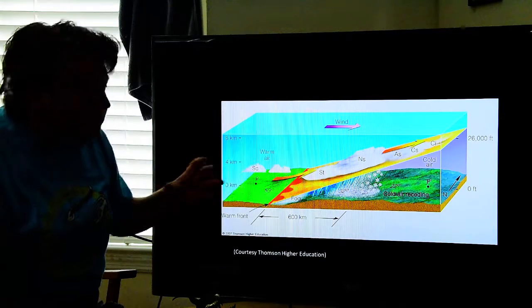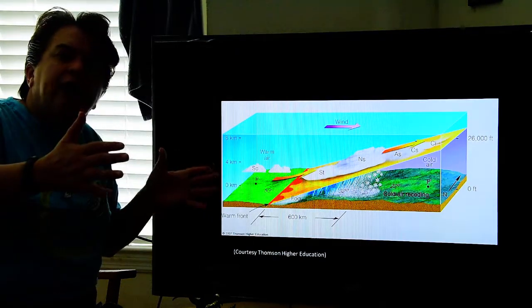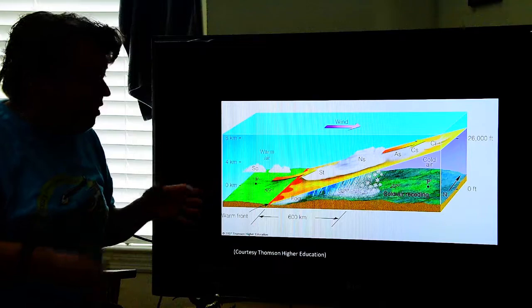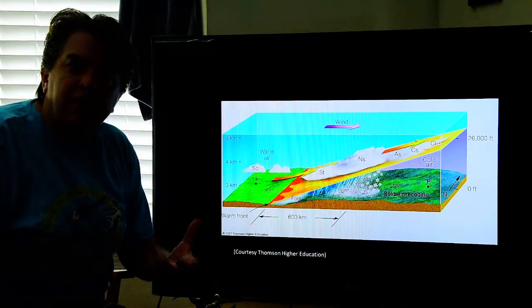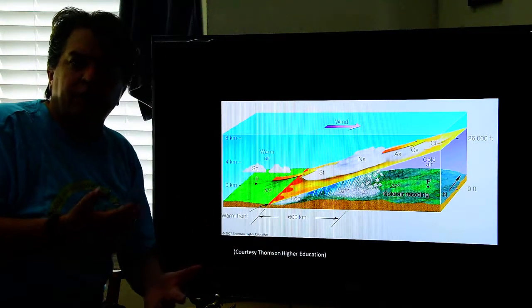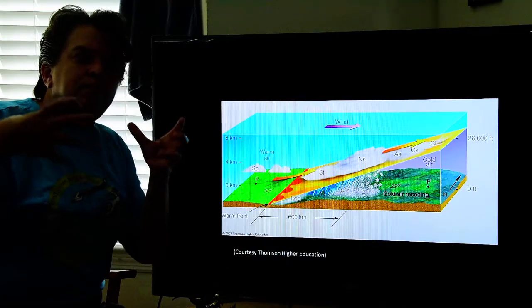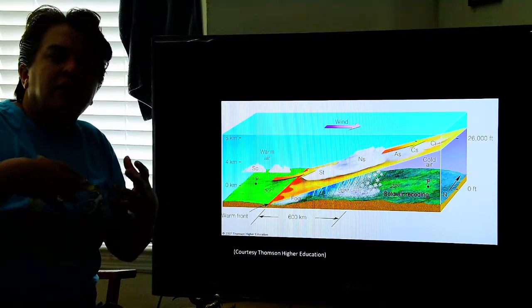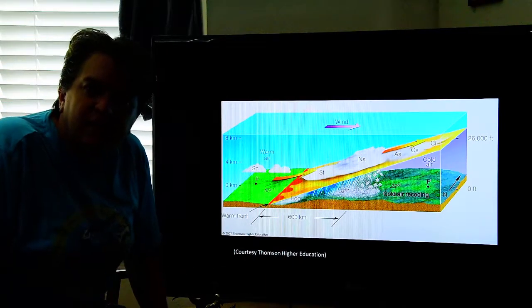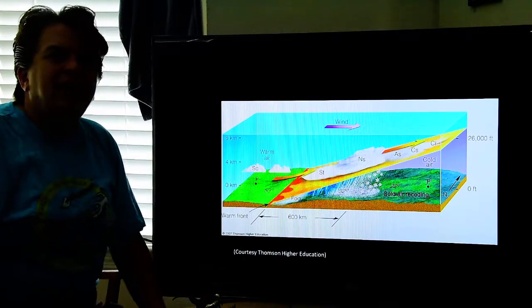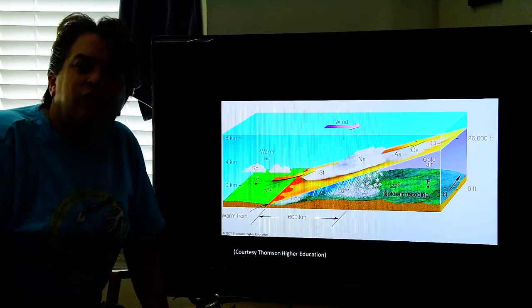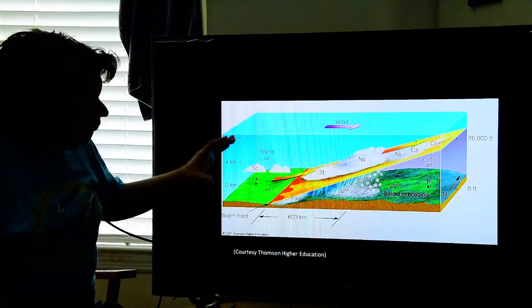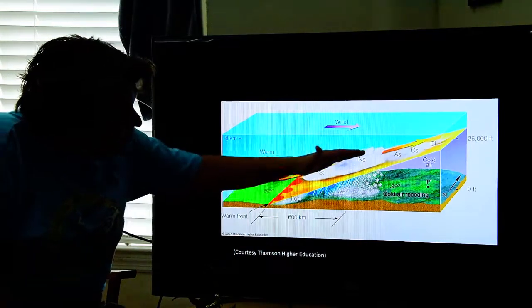And so with the warm front, we usually get a wider area of precipitation. And in many cases, it's not that severe weather. It's not going to be the big thunderstorms and tornadoes. This is more going to be those rainy days that you sometimes have. It's not that severe weather, it's just rainy. And that's often from this warm front advancing.